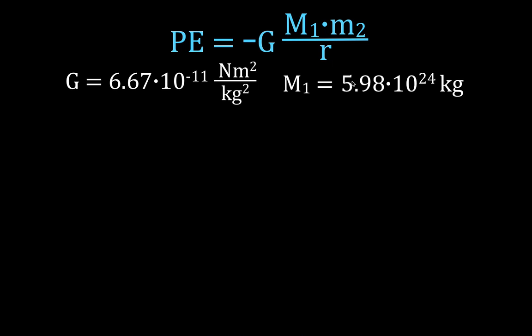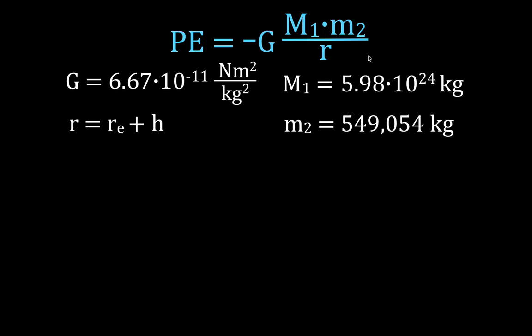The mass of the Earth, M1, is 5.98 times 10 to the 24 kilograms. The mass of the rocket, as we said, is 549,054 kilograms. The distance between those two objects — because we're using this equation, not PE equals MGH — is the radius, the distance between the two objects measured from the center of the Earth. So this is the radius of the Earth plus the height that the object is above the surface of the Earth.